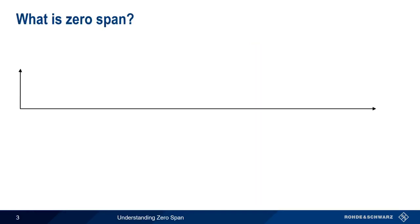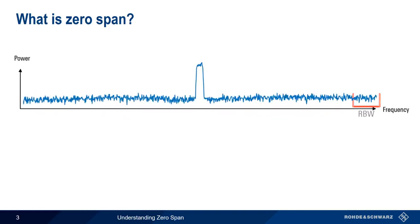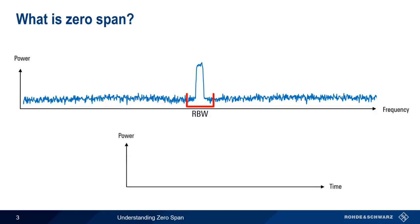Let's start with a brief explanation of what we mean by Zero-Span. A traditional heterodyne or swept spectrum analyzer measures spectrum by effectively sweeping a resolution bandwidth filter across a frequency span, measuring and displaying the power along the way. If we set the analyzer span to zero, the resolution bandwidth filter stays parked on a single frequency, and the analyzer displays power within the stationary resolution bandwidth filter as a function of time.